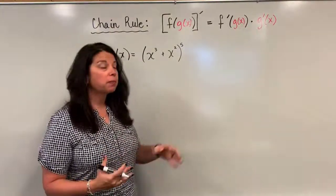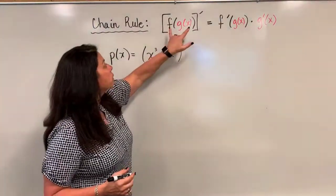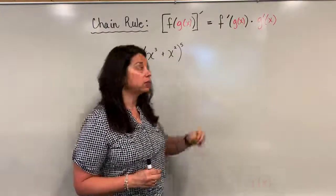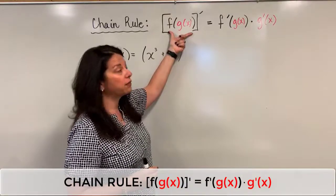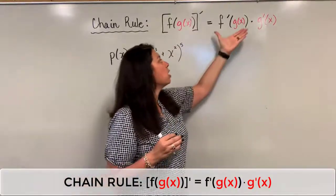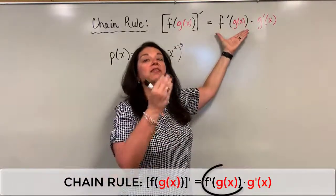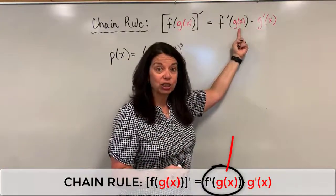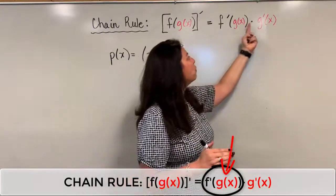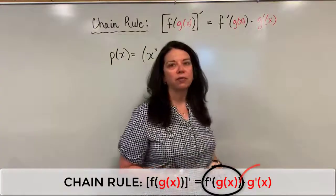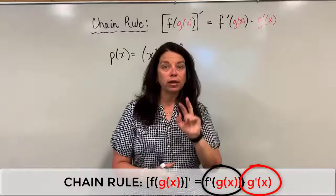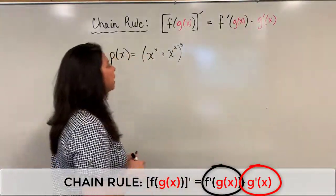But here, just a reminder: when we're trying to find a derivative of a composition of functions such as f composed of g of x, the process is first we take the derivative of the outside function, keeping the inside function intact, and then multiply that by the derivative of that inside function. So that's our process—always two parts that come out of a chain rule problem.